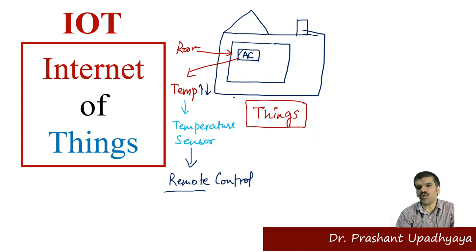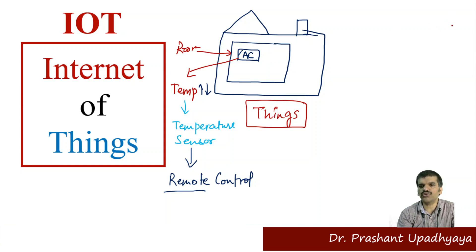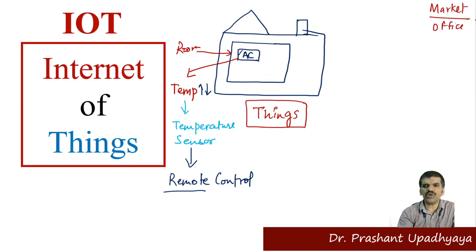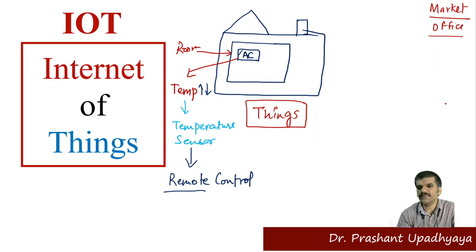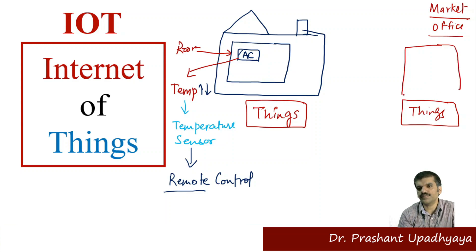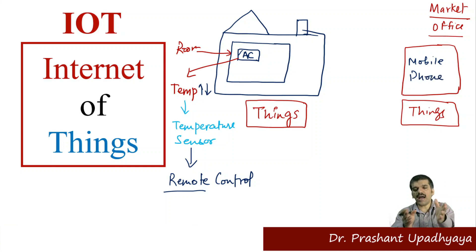The remote only works when it is in range of the AC, but I want to control my AC from somewhere outside the house — from the market, my office, or the university. I want that when I come back home I can already feel cool air inside my room. So I can connect this AC with another thing, such as a mobile phone or a web-based application.